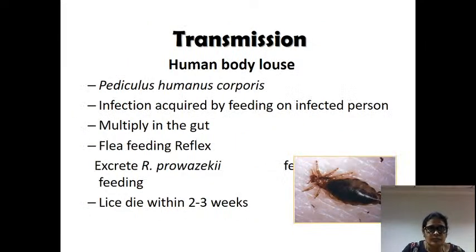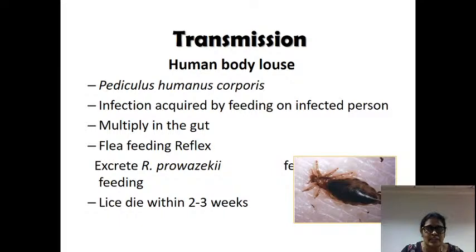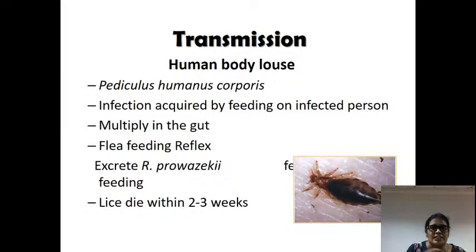Epidemic typhus is spread from human to human by the body louse. The louse cannot inject the organism directly. When it takes a blood meal, the bacteria multiply in the gut and are excreted during feeding. The habit of the louse is: when it feeds, it excretes. Because of this excreta, itching occurs. When we rub the excreta over abrasions caused by scratching, that is the way Rickettsia prowazekii enters the body. The organism can stay in the louse for about two to three weeks.